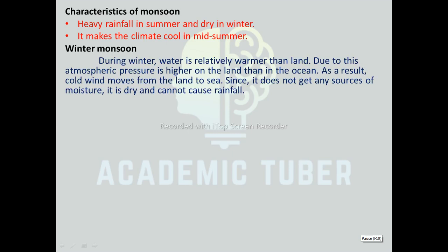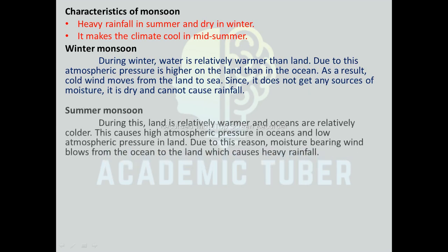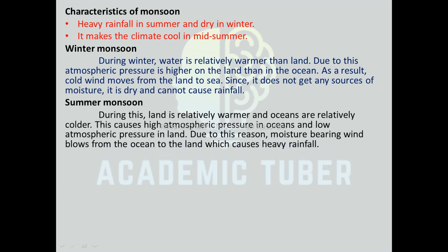Winter monsoon: During winter, water is relatively warmer than land. Due to this, atmospheric pressure is higher on land than in the ocean. As a result, cold wind moves from land to sea. Since it does not gather any source of moisture, it is dry and cannot cause rainfall. Summer monsoon: During summer, land is relatively warmer and oceans are relatively colder. This causes high atmospheric pressure in the ocean and low atmospheric pressure on land. Due to this, moisture-bearing wind blows from ocean to land, which causes heavy rainfall.